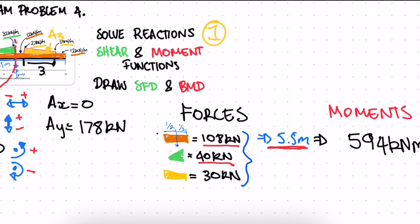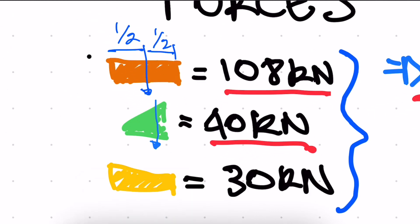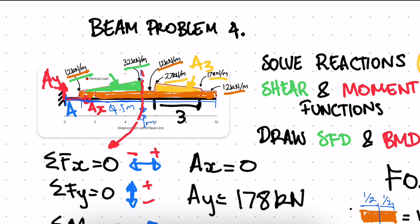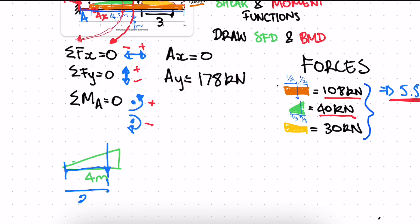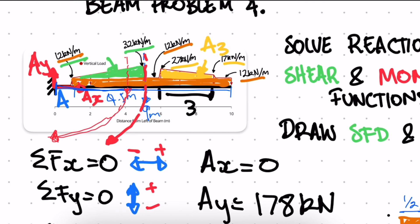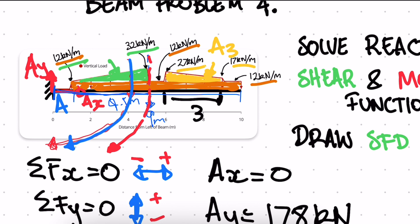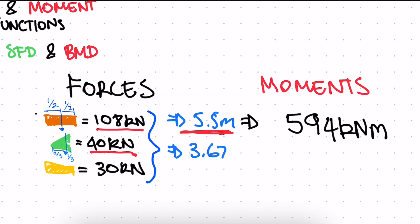For the triangular load of 40 kN, the resultant acts at two-thirds of the base from the zero end. Two-thirds of 4 m = 2.67 m. Adding the 1 m offset gives a total distance of 3.67 m from point A. The moment from the triangular load is 40 × 3.67 = 146.67 kN·m.